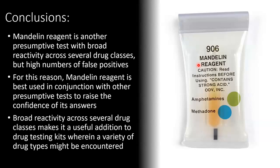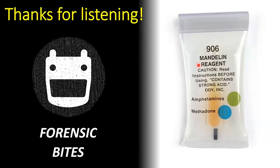To conclude, Mandolin reagent is another presumptive test with broad reactivity across several drug classes, but a high number of false positives. For this reason, Mandolin reagent is best used in conjunction with other presumptive tests to allow more confidence in its answers. Broad reactivity across several drug classes makes it a useful addition to drug testing kits where a variety of drug types might be encountered, but it's less useful in a forensic context where you really need to unambiguously know the identity of a drug. That's all for today — thanks again for listening.